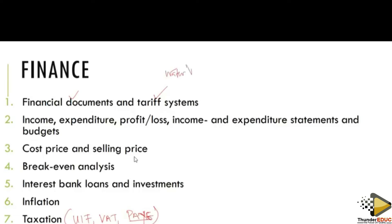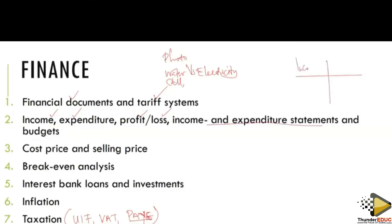For tariff systems we have water and electricity. We also have call options — it might also be photocopying — and you look at how to compare option one to option two or option three: which option will be cheaper. Then we look at income and expenditure, whereby we have profit and loss, surplus and deficit. In income and expenditure statements, one side has income and the other side has expenses — it's more like a budget.